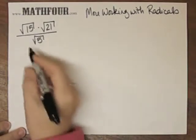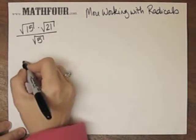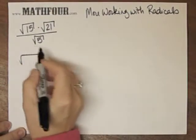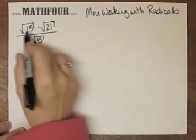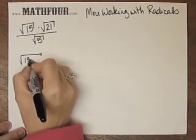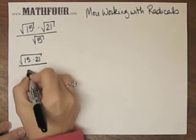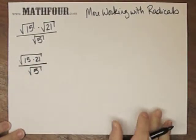On this one, I can squish the bits together, 15 times 21, and have it be over square root of 5.